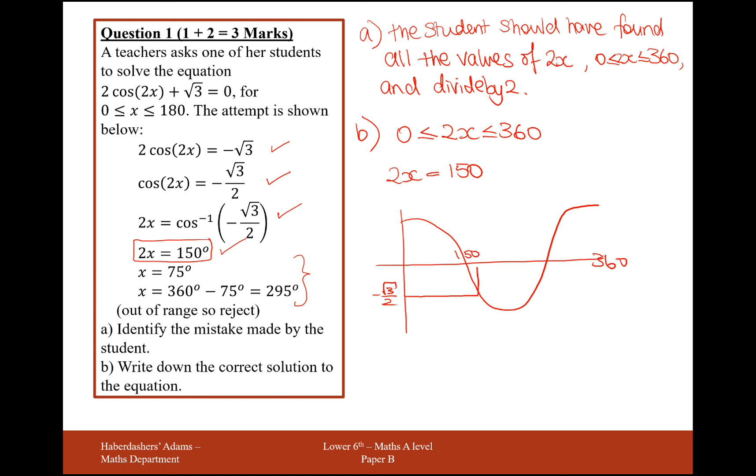So for the next solution, that's going to be 360 minus 150, so that's going to be 210. So 2x equals 150 and 210.